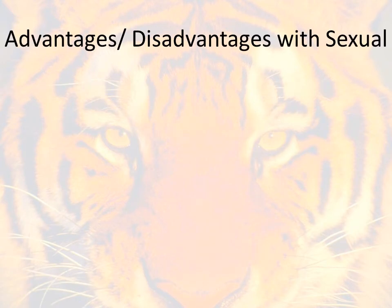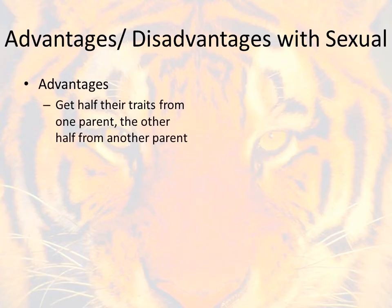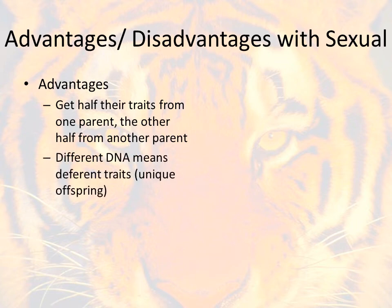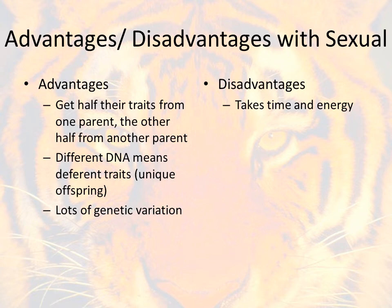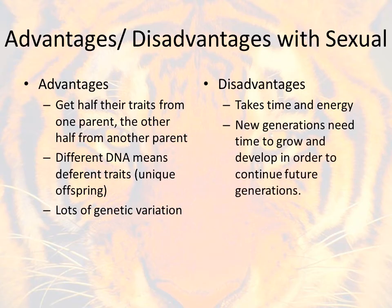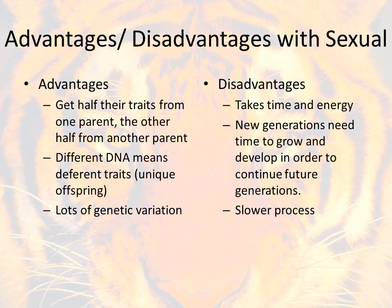Looking at advantages and disadvantages of sexual reproduction: one big advantage is you get half of the traits from one parent and the other half from another parent. That leads to a different DNA makeup in future generations, and you get unique traits that are a little bit different for each offspring, giving you tons of genetic variation. Some disadvantages are that it takes a lot of time and energy — many creatures roam miles and miles just to find a suitable mate, and during that time they're at risk from predators. Additionally, new generations need a lot of time to grow and develop to be mature enough to reproduce themselves, making this a much slower process.